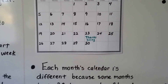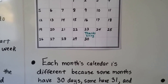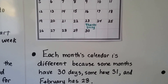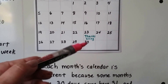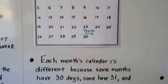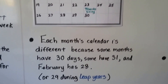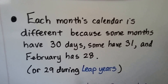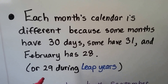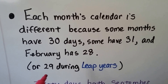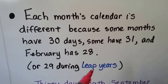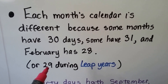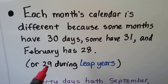So each month's calendar is different because some months have 30 days, like this November, and some have 31, and February has 28 or 29 during leap years. Every four years is a leap year, and February will have 29 days.